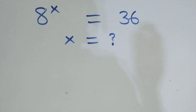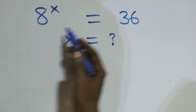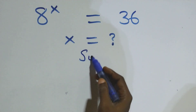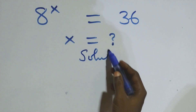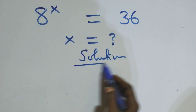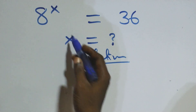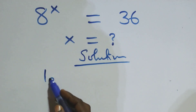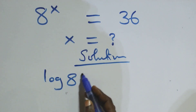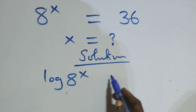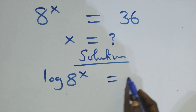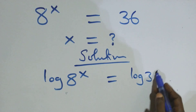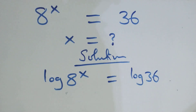Hello, you are welcome. How to solve this nice exponential equation. What we have here: we take the log on both sides, so we have log 8 raised to power x equals to log 36.